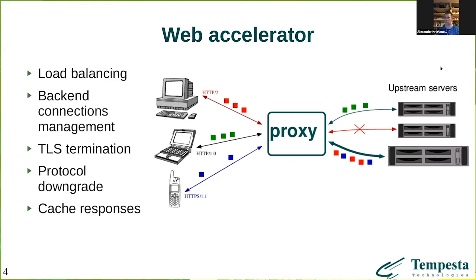Let's consider a simple case. We have an HTTP accelerator as a proxy, clients which speak on different HTTP protocols, and a bunch of upstream servers. The larger server means a faster server. The proxy must load-balance requests among the servers, and the faster server should get more requests. If one of the servers fails, the proxy should redistribute HTTP requests among the rest. Also, since upstream servers usually speak only one HTTP protocol version, the proxy must convert different HTTP versions, and web accelerators use cache to reply from cached responses.